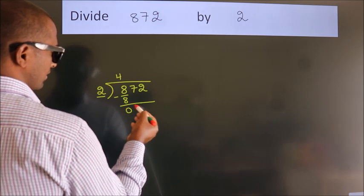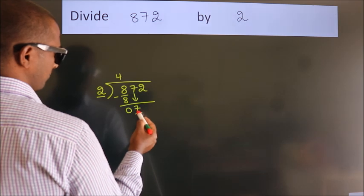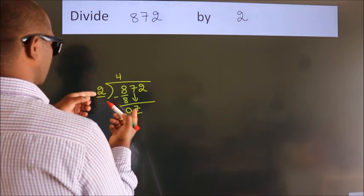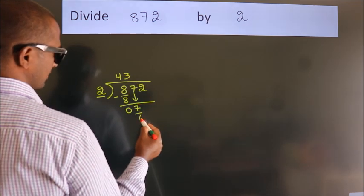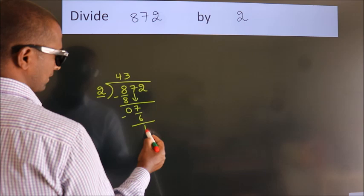After this, bring down the beside number, so 7 down, so 7. A number close to 7. In 2 table is 2 threes, 6. Now we subtract, we get 1.